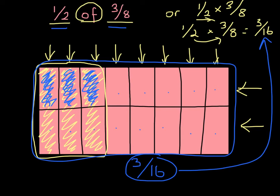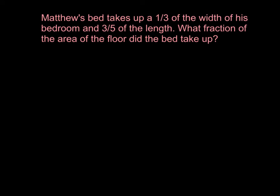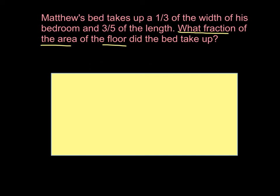I'm going to do another example. It's question 10 from our homework pages on October 7th. Matthew's bed takes up a third of the width of his bedroom and three-fifths of the length. What fraction of the area of the floor did the bed take up? So straight away we have to think, what are we asked? We're asked what fraction of the area of the floor did the bed take up. So we want to represent this using a model. So if we draw a rectangle, we have to think to ourselves, what does this rectangle represent? And we always think of our rectangle as a whole or one. And in this case, it's going to be the area of the floor.